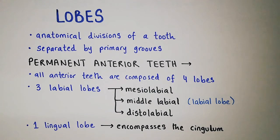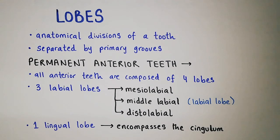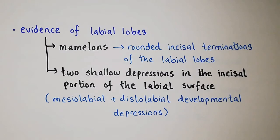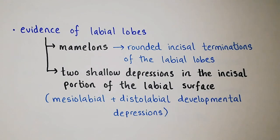All anterior teeth are composed of four lobes. Out of these, three are the labial lobes and one is the lingual lobe. The three labial lobes are the mesiolabial lobe which is on the mesial side, the middle labial lobe, and the distolabial lobe which is on the distal side. The one lingual lobe encompasses the cingulum. In the anterior teeth we have mamelons and developmental depressions, which give us evidence of the presence of labial lobes. Mamelons are rounded incisal terminations of the labial lobes, and there are two shallow depressions in the incisal portion of the labial surface — these are the mesiolabial and distolabial developmental depressions.